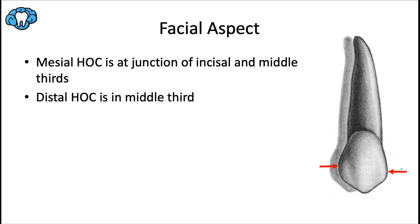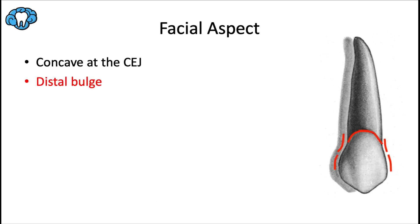The mesial height of contour is at the junction of the incisal and middle thirds of the crown, and the distal height of contour is in the middle third — the same arrangement as the maxillary lateral. From the facial aspect there's also a concavity at the CEJ, a bit more distinct on the distal than the mesial. The mesial surface is more pointed and sharper than the distal, which is more rounded due to a distal bulge. That convex distal contour creates a fairly large gingival embrasure and contributes to the longer distal cusp ridge relative to the mesial.